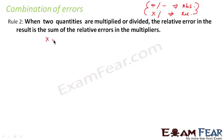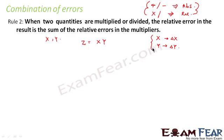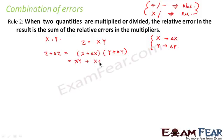Now suppose we have two quantities x and y, and the third quantity z is equal to the product of x and y. Here, we assume x has some error delta x, and y has some error delta y. So z plus delta z will be equal to x plus delta x, multiplied by y plus delta y. We can expand this as xy plus x·delta y plus y·delta x plus delta x·delta y.